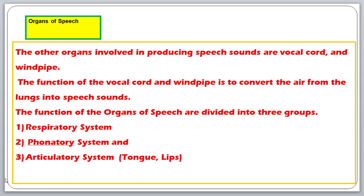The production of speech sound depends on three systems: the respiratory system, the phonatory system, and the articulatory system. All three systems are involved in producing a single speech sound. We will look at each of these systems in detail in the next lecture.